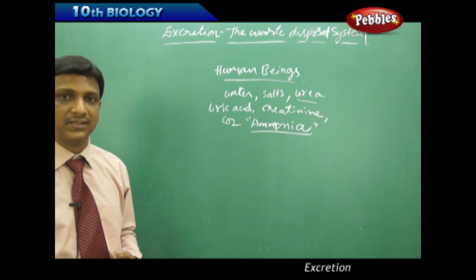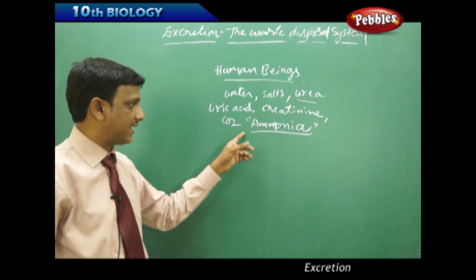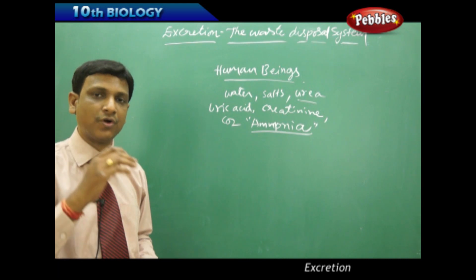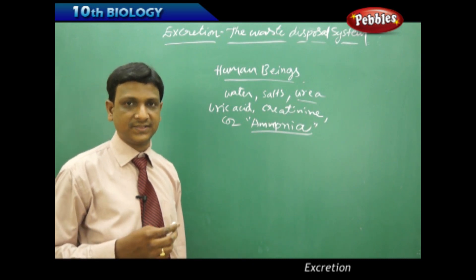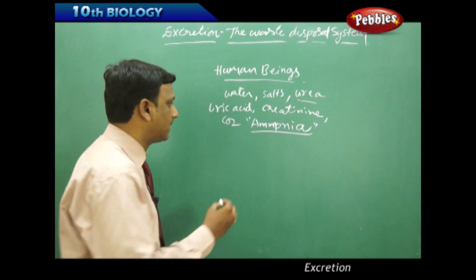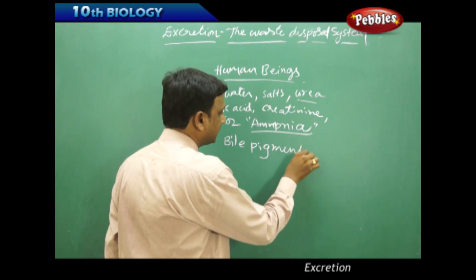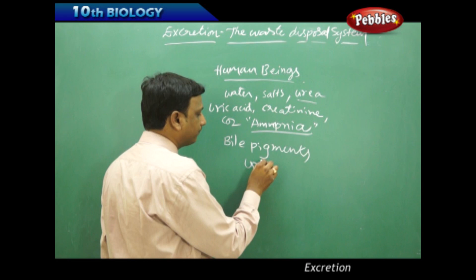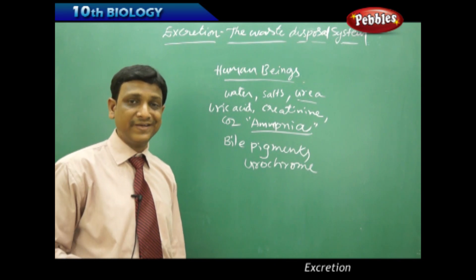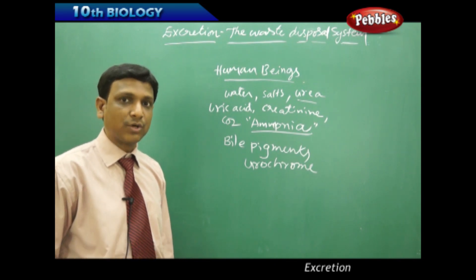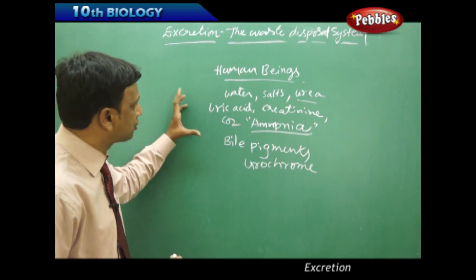These nitrogenous compounds should not be present in the blood in excess quantity, so they must be removed from the body. Carbon dioxide is sent out through the lungs during respiration. Ammonia is the most dangerous substance that must not remain in the blood. Certain pigments are also produced as waste — during the breakdown of RBCs, bile pigments like bilirubin and biliverdine are produced, along with pigments like urochrome. Drugs and medicines are detoxified in the liver and converted to substances that must also be excreted.